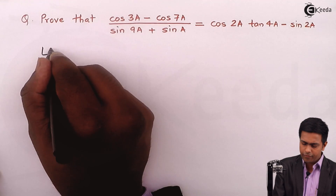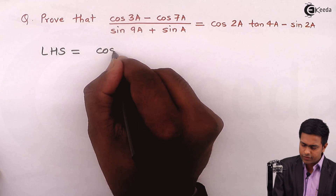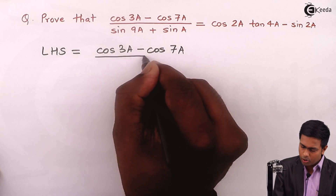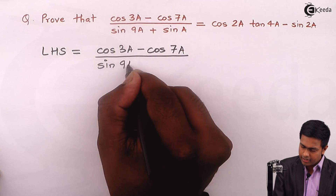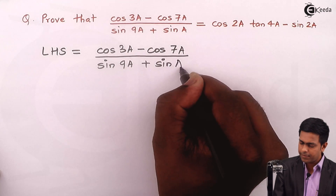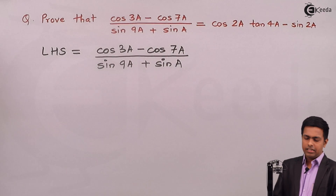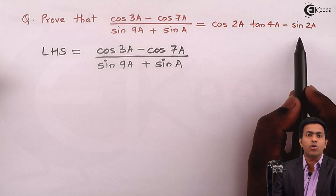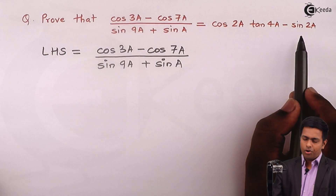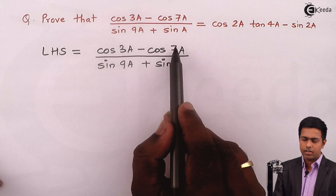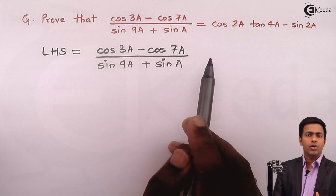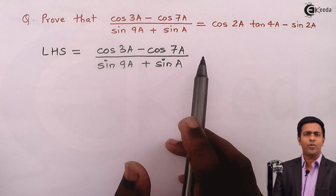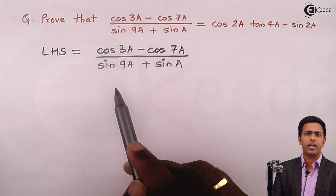So left hand side is equal to (cos 3a minus cos 7a) whole upon (sin 9a plus sin a). Now to prove this result, we don't want any denominator. Also, if you see the numerator or denominator, it reminds us about the formula of factorization. So in the numerator and denominator we will start with the factorization formula.